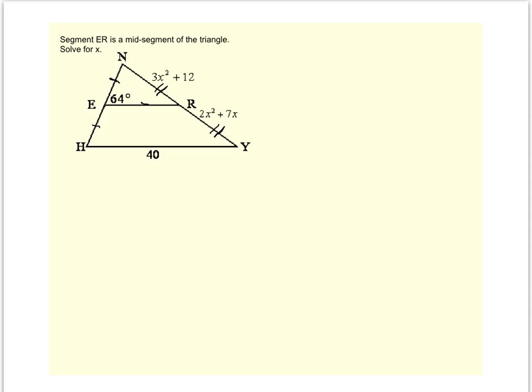The mid-segment is parallel to its opposite side. And also it creates a couple of pairs of congruent angles. This angle is congruent to this angle because they're corresponding angles cut by a transversal with parallel lines. And then also this angle is congruent to that angle.